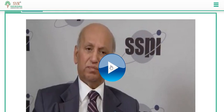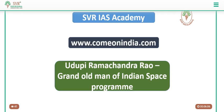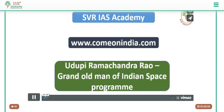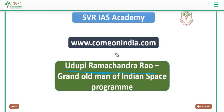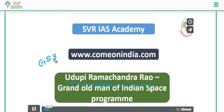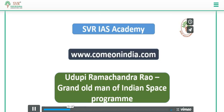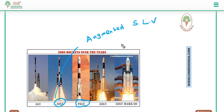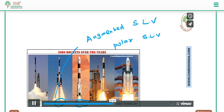In GS Paper 3 there is a syllabus on the contribution of Indian scientists to the development of science in India and its applications. You may get a question on UR Rao and his contribution to space science in India, and how his contribution led to the development of PSLV and GSLV, especially the cryogenic engine. He was chairman of ISRO and the Space Commission for 10 years, during which he helped immensely in the development of ASLV, PSLV, and initiation of the GSLV.